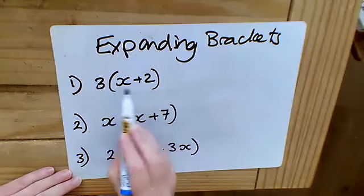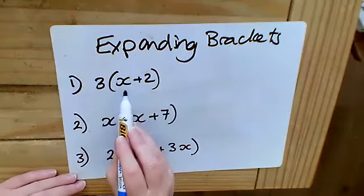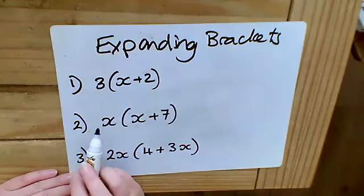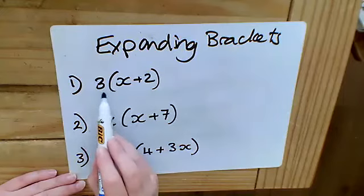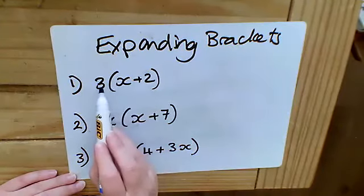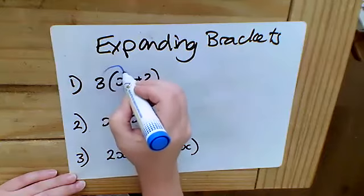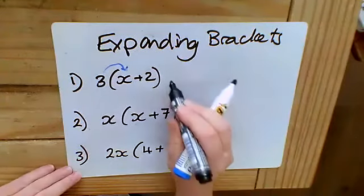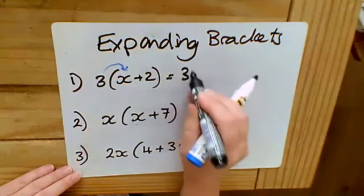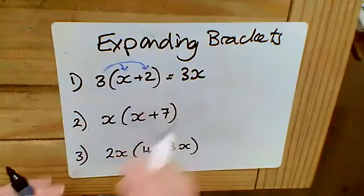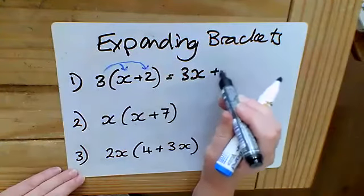We can't do x plus two first because using BIDMAS we should do brackets first, but I can't — I don't know what x is. So the next thing I can do is multiplication. What this means is every term inside the bracket needs to be multiplied by whatever is outside the bracket. In this case, three times x gives me 3x.